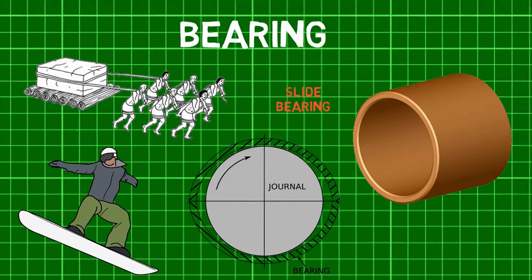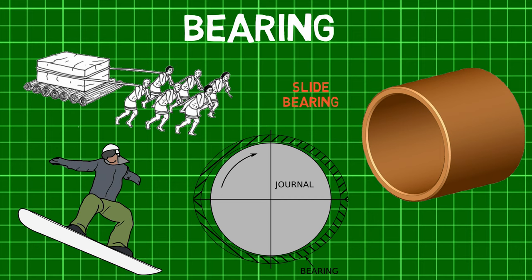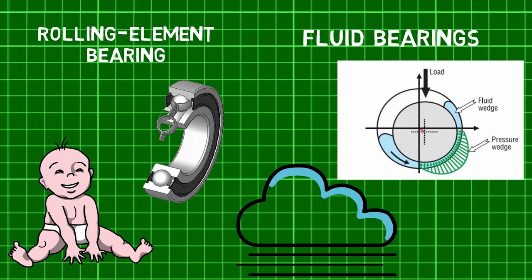Hence, we first saw what bearings are, then saw what the simplest type of bearing is, and finally went on to see what rolling element and fluid types of bearings are.